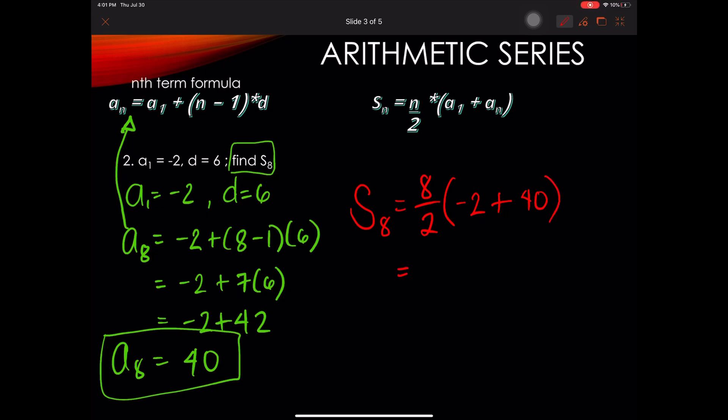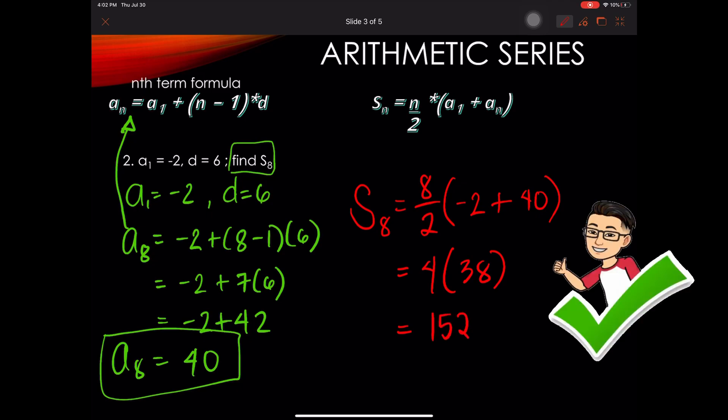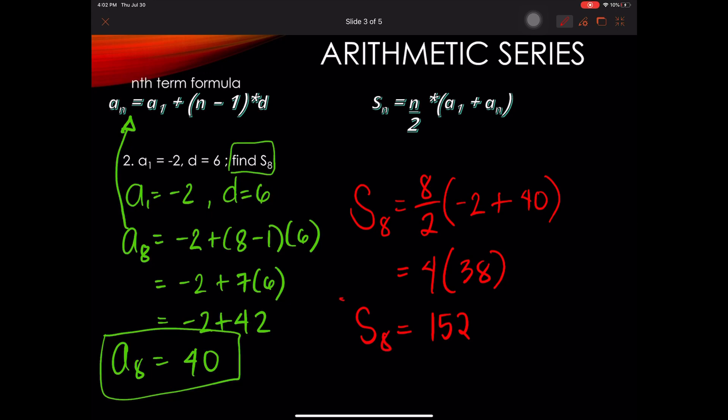gives us 8 divided by 2 is 4. And negative 2 plus 40 is 38. So 4 times 38 gives us 152.